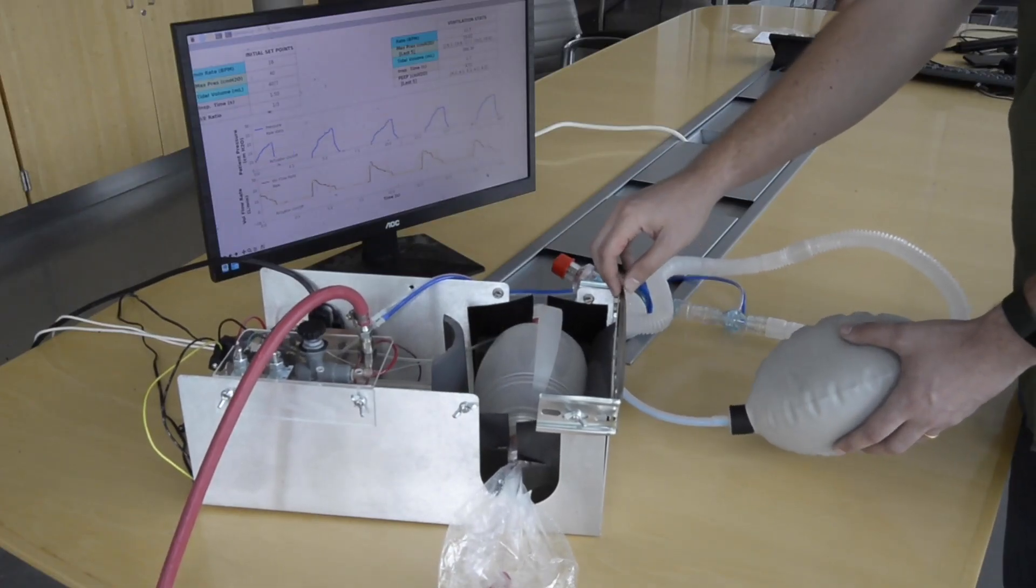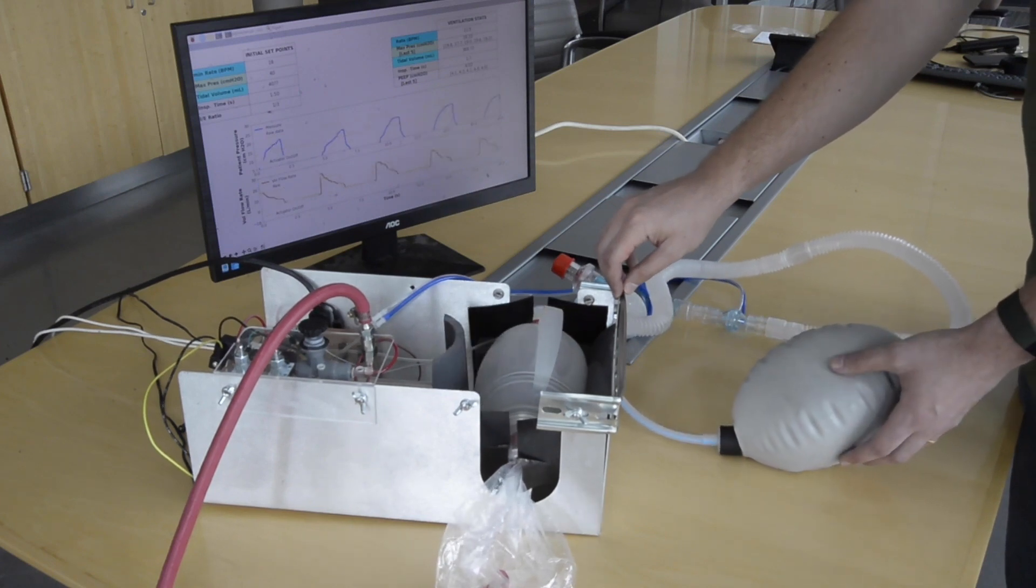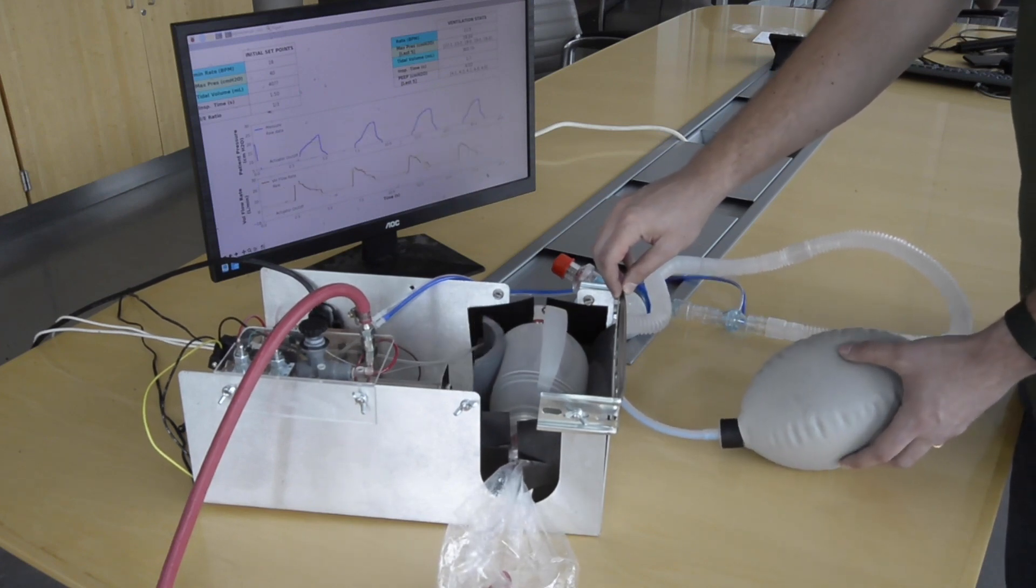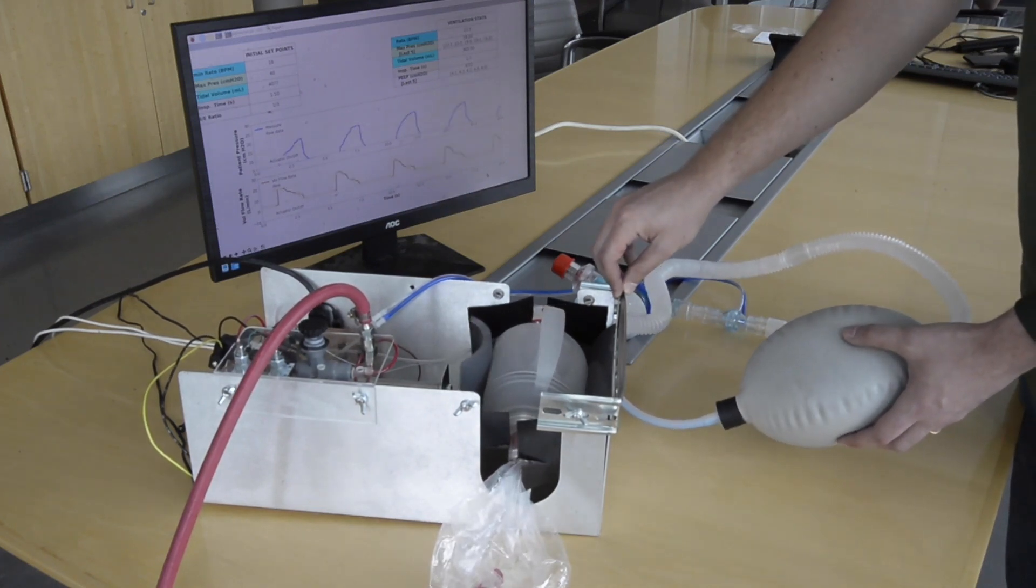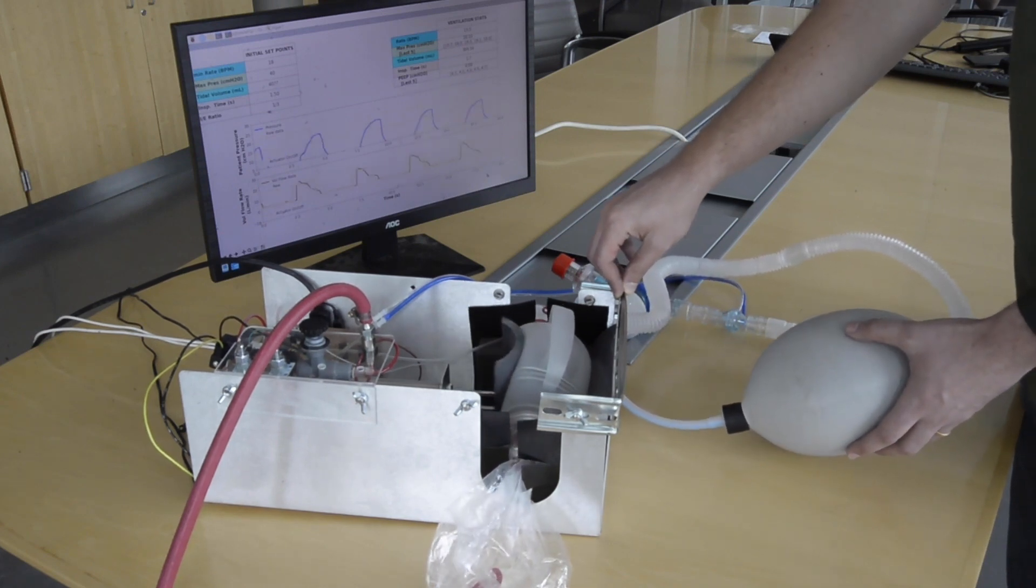The ventilator can normally operate on a fixed duty cycle. However, it also has overpressure protection to sense when the patient pressure is too high and to immediately stop a breath.